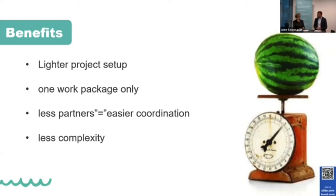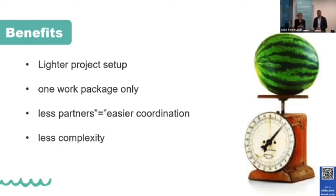Once your project is approved, there are benefits to running it too. There is only one work package, so you only worry about activities in that one package. Because you can only have three to seven partners, it makes for easier coordination — more flexible and versatile when communicating and working with a small number of partners. Overall, because of the easier budget, the one work package, and fewer partners, there is less complexity to the whole project, making it easier to administer and run.